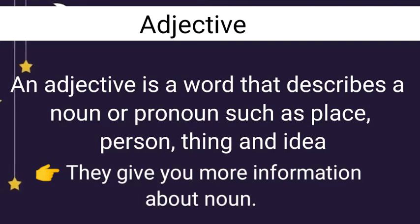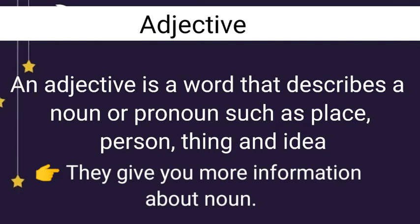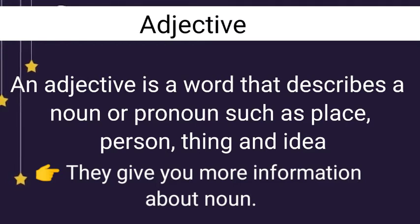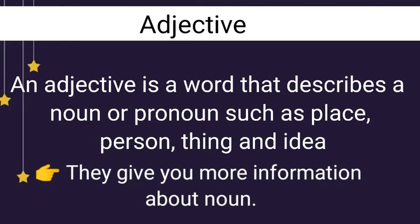Adjective kya hai? Adjective noun or pronoun ko describe karta hai. Jaisi place, person, thing and idea ko describe karta hai. That means unki speciality bata hai. Matlab unki vishishita bata hai ki woh kaisi hai, kya hai. Matlab adjective eek vishishad hai jis ka meaning yeh speciality bataata hai, kishi bhi chiz ki speciality bataata hai.